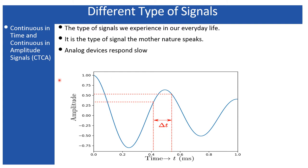Take the example shown here. I have drawn a sample continuous or analog signal. If you consider any arbitrary time interval on the time axis and zoom into that section, you will never reach a point where two consecutive points are distinguishable with no other points between them. You will never reach such a point. This is the example of the analog signal.